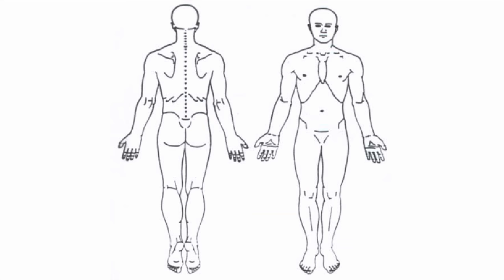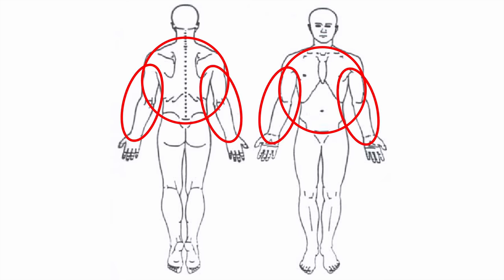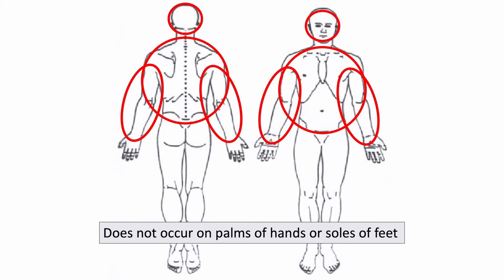There is a particular distribution of these lesions. They most commonly affect the trunk — you can see them on the patient's back — as well as the arms, forearms, hands, and face in some individuals. However, they can occur almost everywhere on the body except on the palms of the hands and the soles of the feet. So if you see a lesion like this on the palms or soles, it is going to be a different condition.